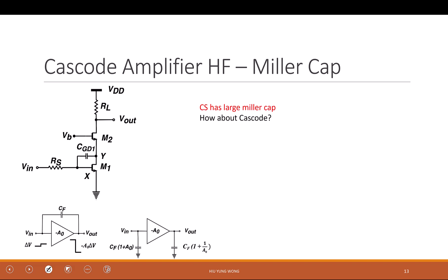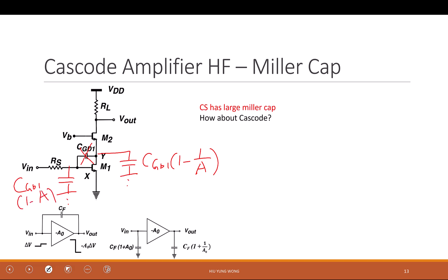So the first sign is that we might have this problem. I decided to compute the Miller cap anyway. I'm going to put it as CGD1 times (1 minus 1/A), using the regular procedure — 1 minus A. But now the problem is: what is A?